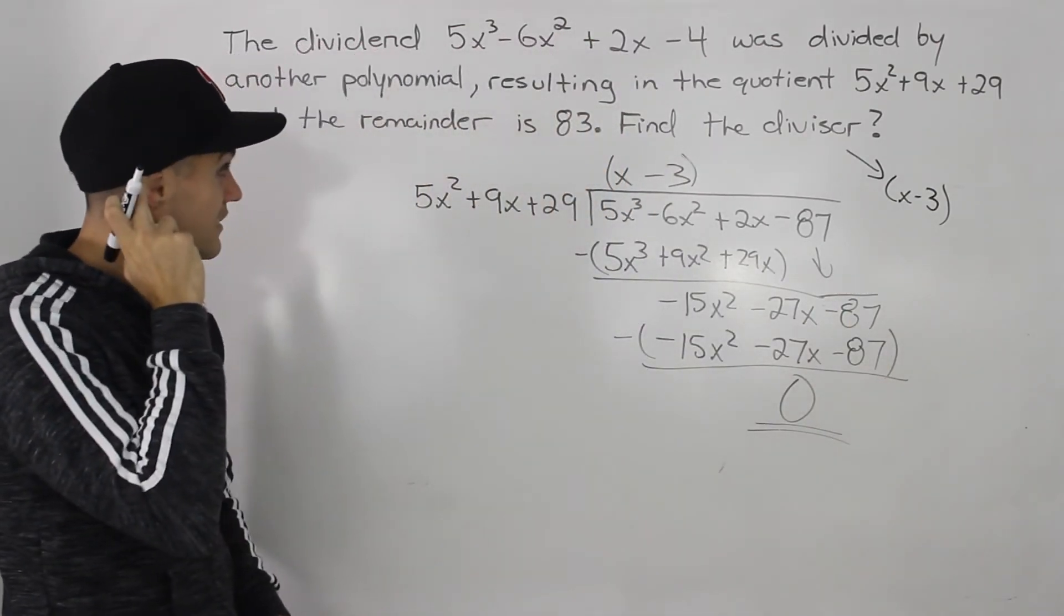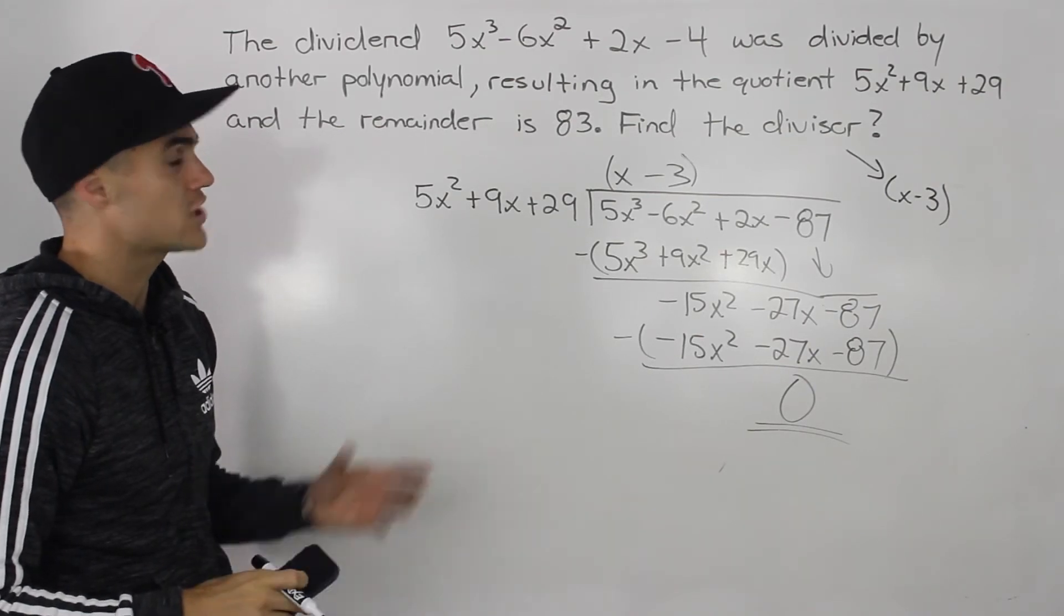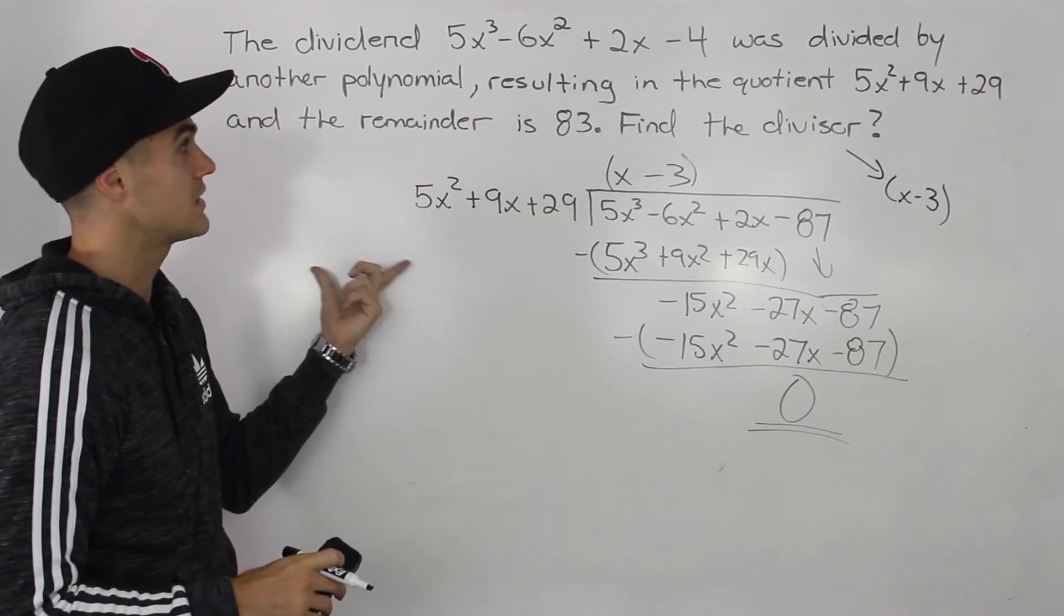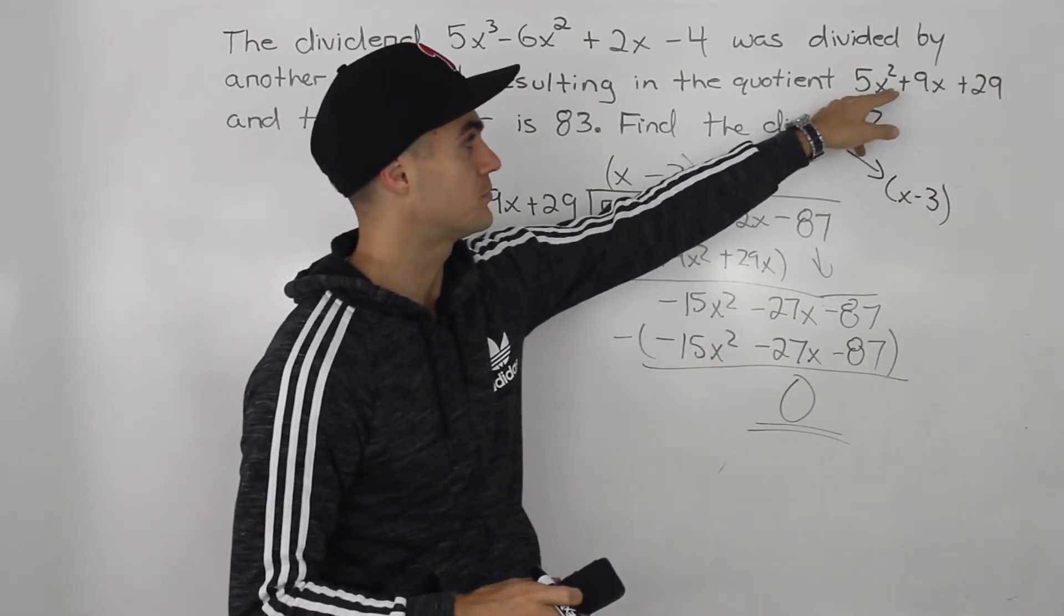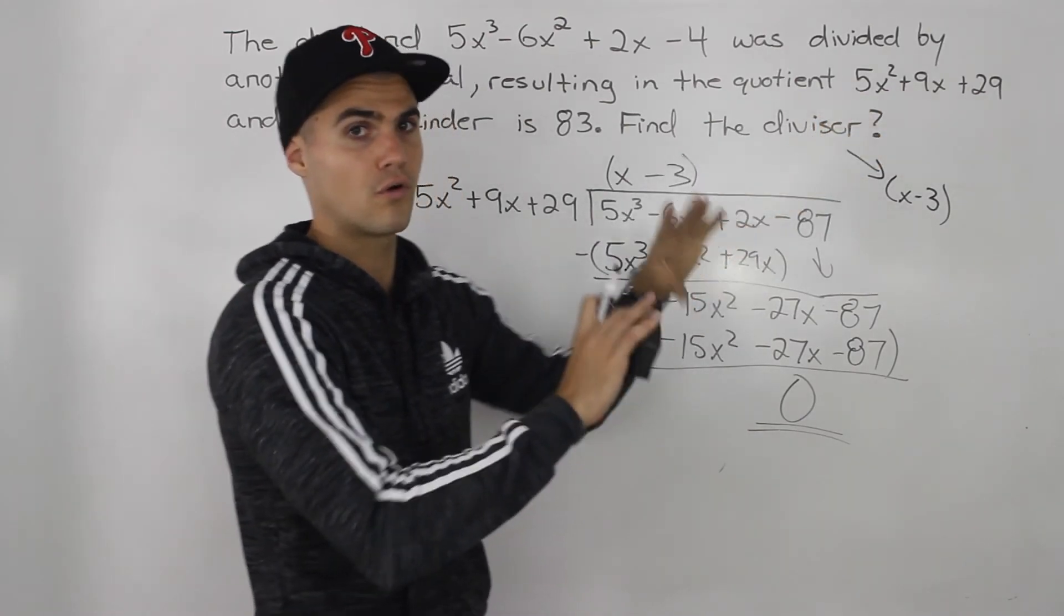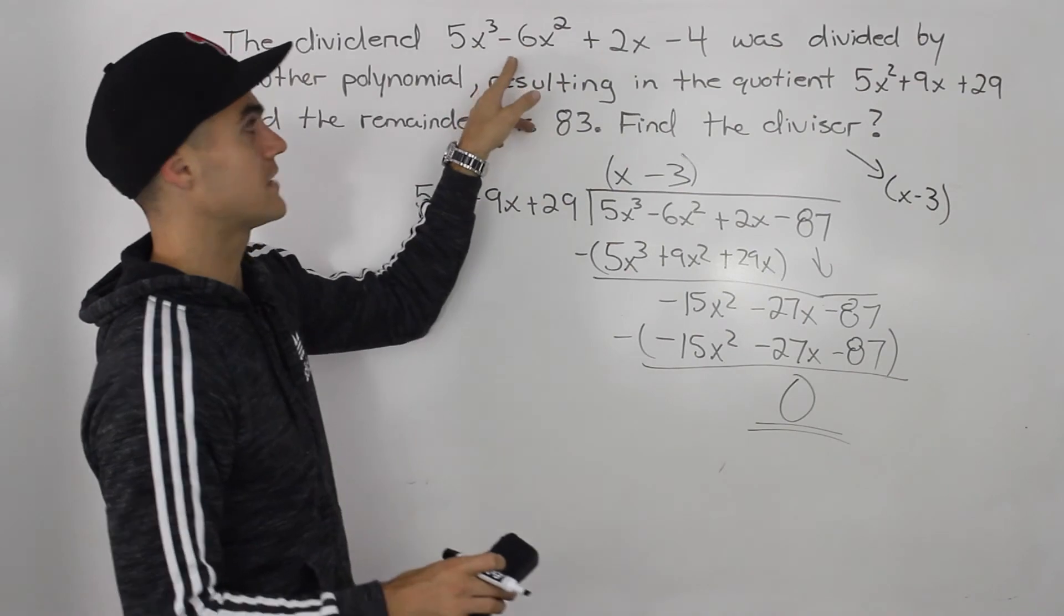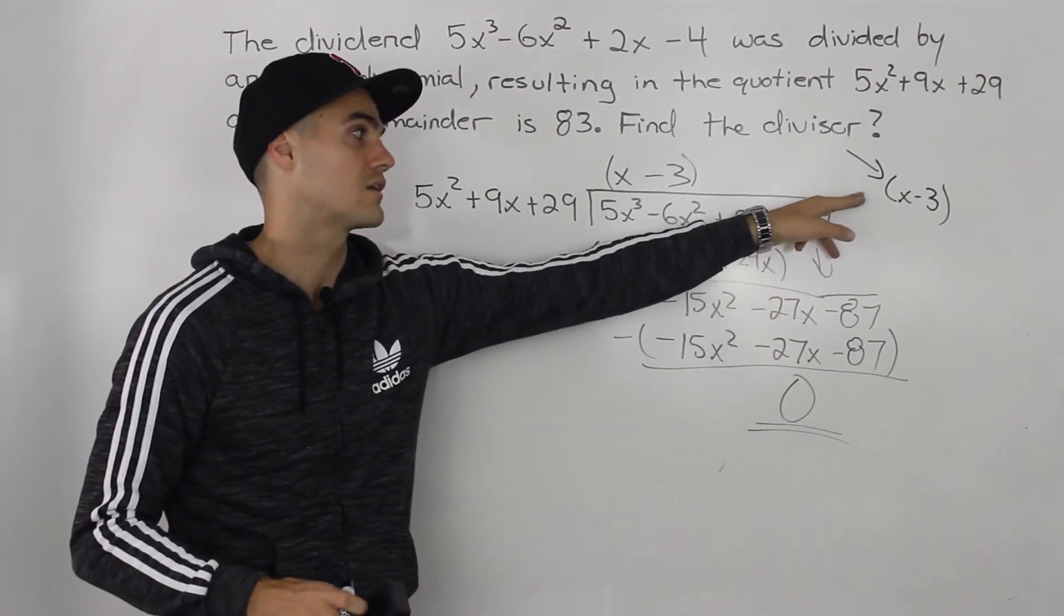And then if you really have time, it would take you quite a while, but you can check the division statement. So on the left side, we have the dividend. So we keep that as this. And then what you can do is you could take your divisor, multiply it by the quotient. So foil all that out and then add that remainder and you should end up getting this dividend here. And if you do, then you know that this divisor is correct.